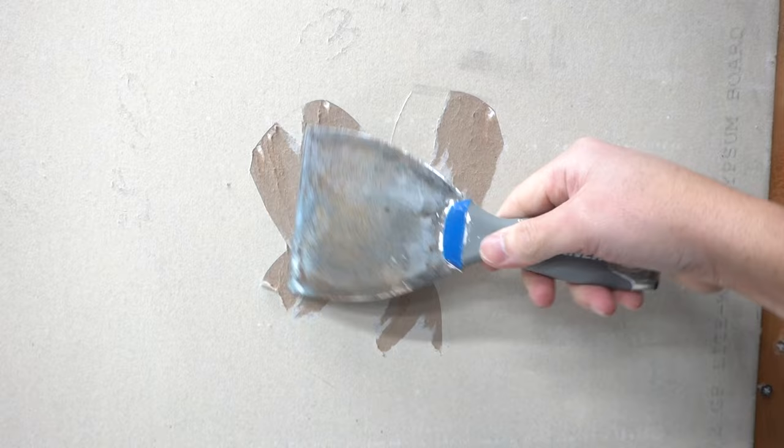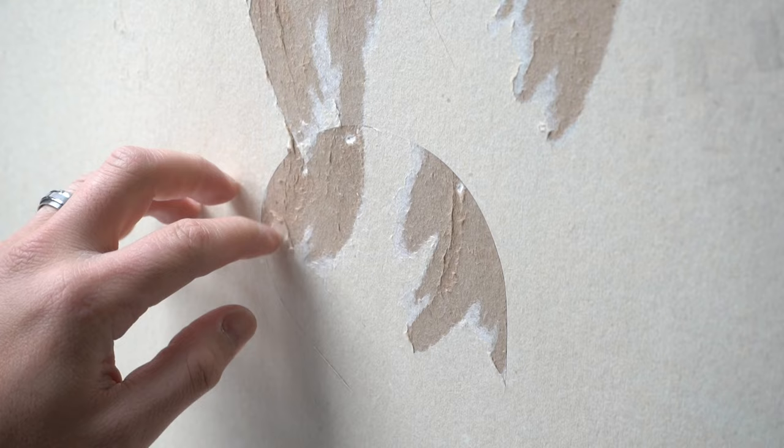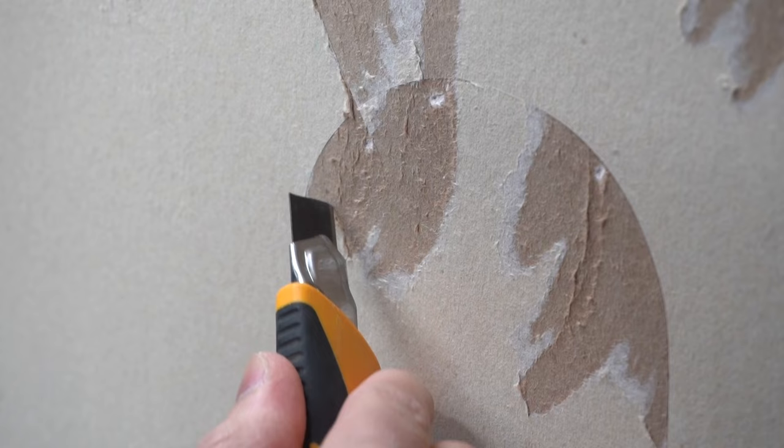So for these little fuzzies right here, the drywall knife might not be able to get to them. So you can probably just get a utility knife, go trace out where the fuzzies are and just peel it off like this.